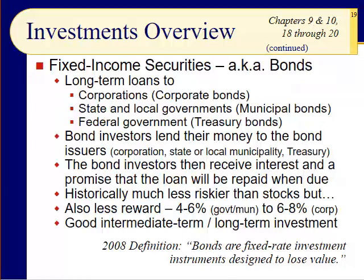Slide number 19: fixed income securities — bonds. Bonds are loans; they are long-term loans to corporations (corporate bonds), state and local governments (municipal bonds), and the treasury (treasury bonds/government bonds). When you're a major corporation or government, you go to the investment community and say: will you lend us money? We'll pay you 4%, 6%, maybe 8%. The investment community rates your credit and says yes. You then promise to pay the bond holders interest and principal — just like when you go to a bank, but now you're the bank.